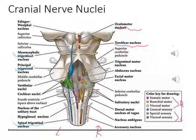At the pons level you can see the abducens nucleus and the facial motor nucleus, and at the medulla level you can see the dorsal motor nucleus and the hypoglossal nucleus. All these nuclei, viewed longitudinally, form six columns, and if you observe them in cross-section you will see a different arrangement.